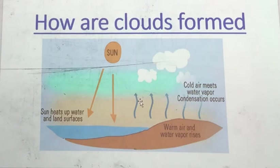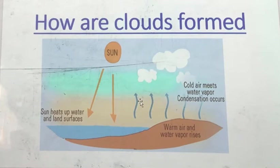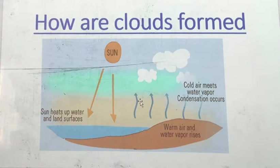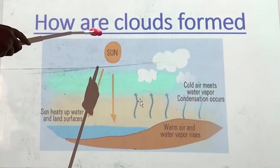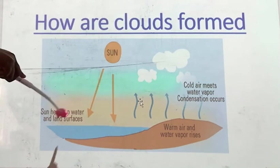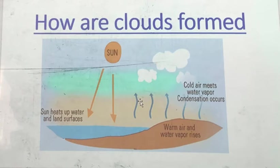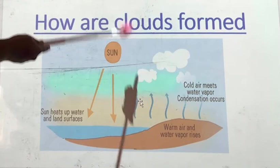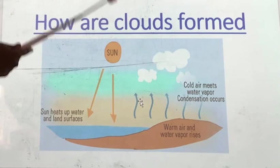Now let's take a look at how clouds are formed. The water comes from the cloud. How are these clouds formed? First of all, sun rays shine on the water. When that happens, the water gets vaporized. Can you see the sun? The sun rays shine on the water, and when that happens, the water vaporizes.